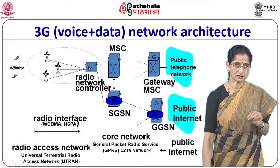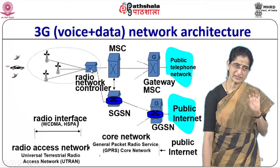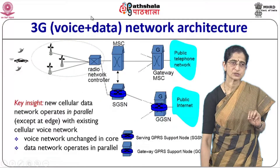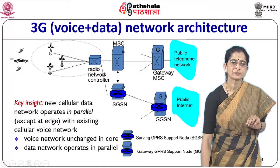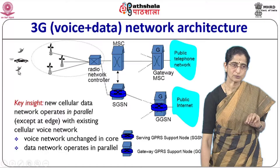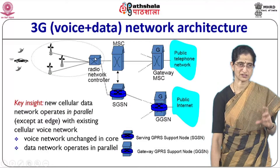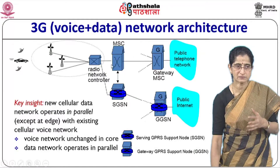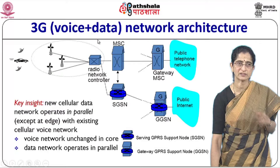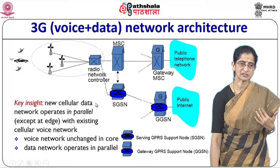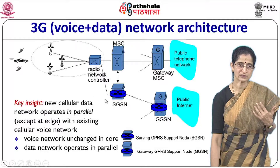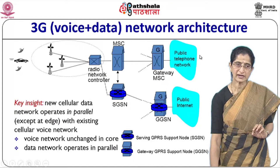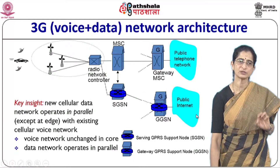The 3G network architecture is very similar to the 2G architecture as far as voice is concerned. It is basically a voice plus data network architecture. You have multiple base stations connected to a base station controller, connected to an MSC — the mobile switching center — and connected to a gateway. Additionally, there is a parallel data network which handles the data part and connects to the internet.